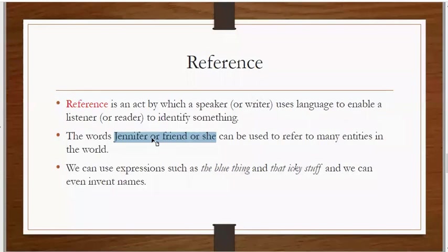The names, the nouns, and the pronouns are references. We can sometimes, instead of using nouns and pronouns, use certain expressions to refer to certain things. We can use expressions such as 'the blue thing.' Give me the blue thing. Now you are referring to something by using 'the blue thing.' This is how sometimes we can invent names.